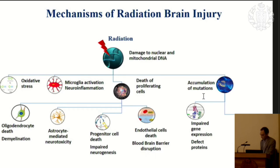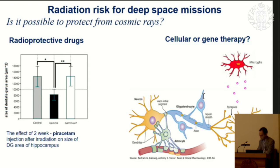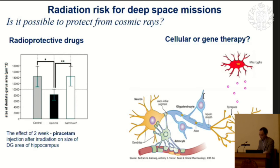There is a complicated problem — how to solve this complexity of events, and how to protect from cosmic radiation. At the moment, most known radioprotective drugs work with very low energy radiation like gamma rays or protons. We did several experiments which were successful in protecting the brain after or before irradiation. But these drugs only work with very light particles. What could we expect in the future? Several recent works indicate that we can use gene or cellular therapy to prevent some important targets.